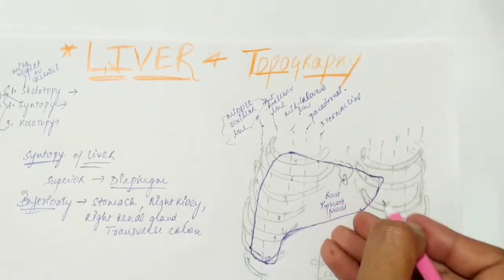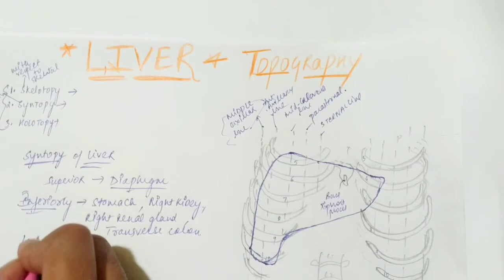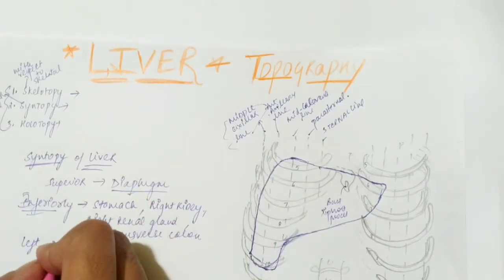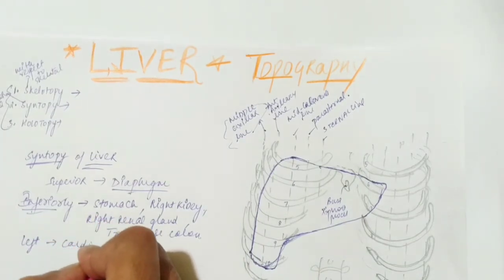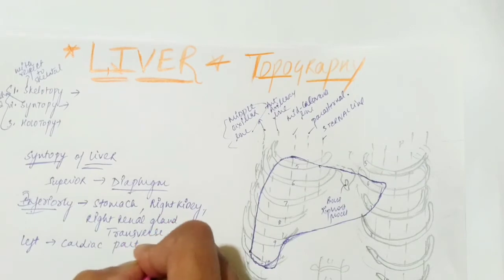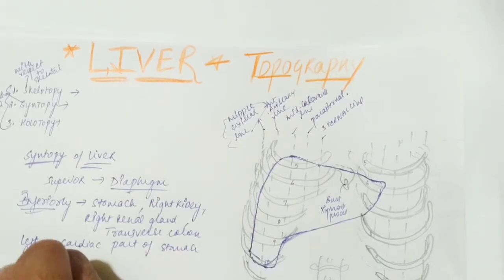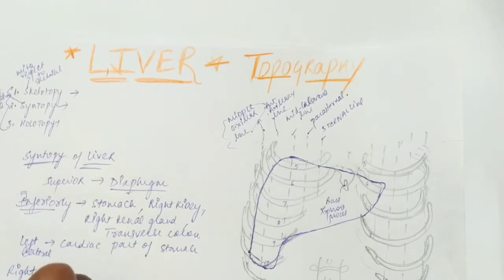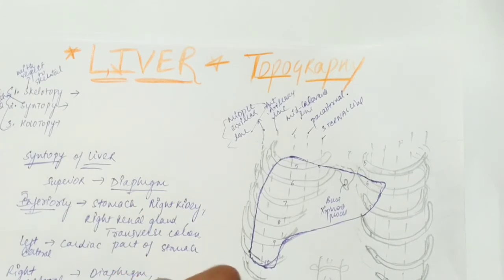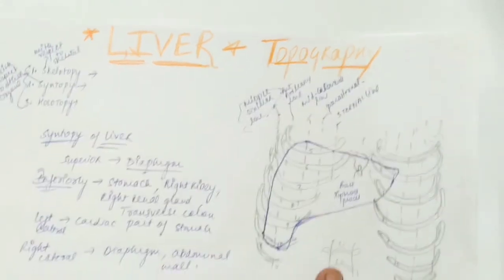Laterally, on the left side, there will be the stomach — specifically the cardiac part of the stomach, or the connection of your esophagus with the stomach. On the right side, there will be the diaphragm — that part of the diaphragm or the abdominal wall. So this was your syntopy.